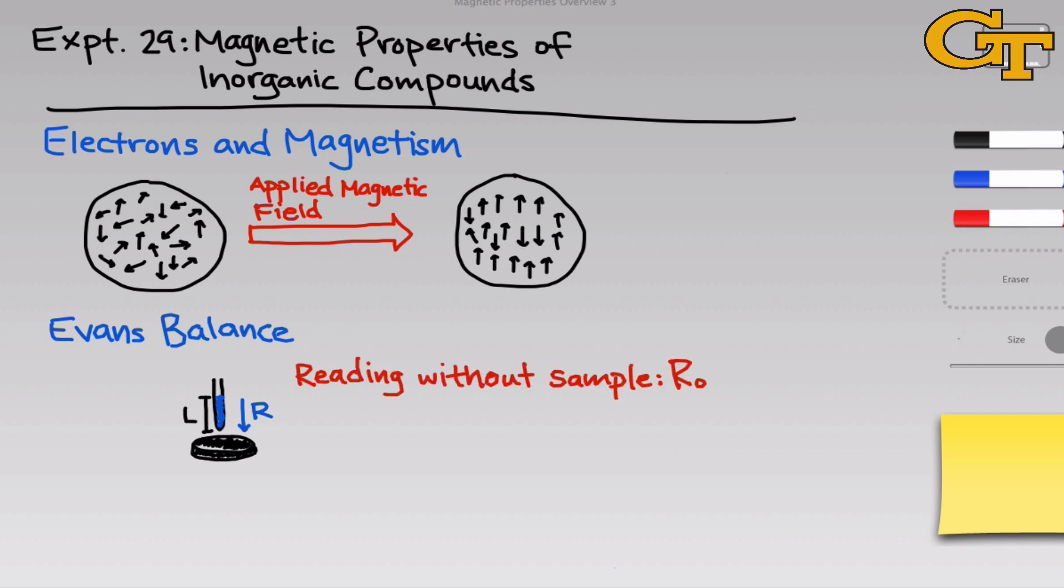We first need to take a reading without the sample because the glass of the tube can contribute to magnetic effects. The glass of the tube is diamagnetic. It contains only paired electrons, but the paired electrons do repel slightly the magnetic field, and that's going to affect our value of R. The reading with the sample we'll call R. This is kind of like a blank, where we're zeroing out the effects of the glass so that the magnetic susceptibility we calculate belongs to the sample only.